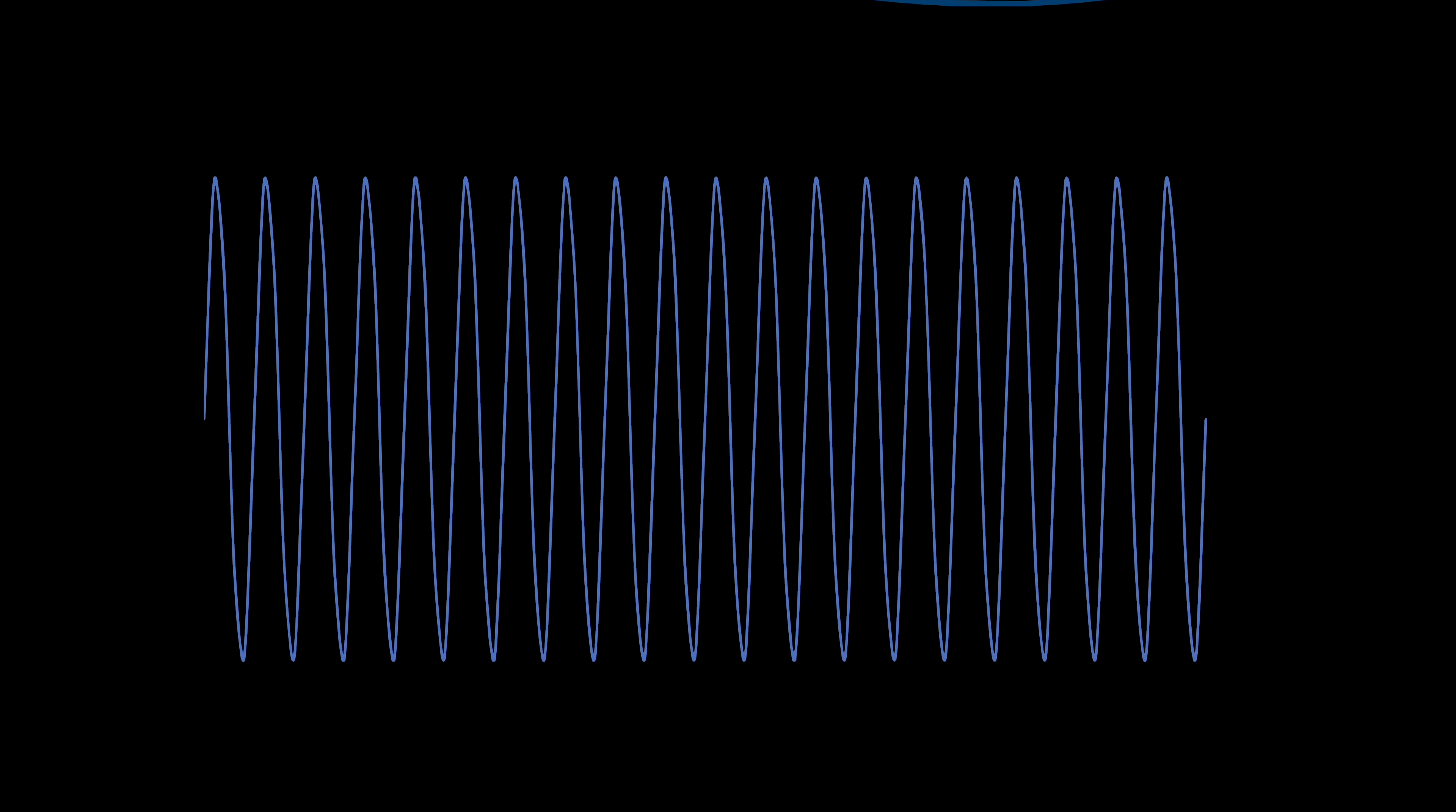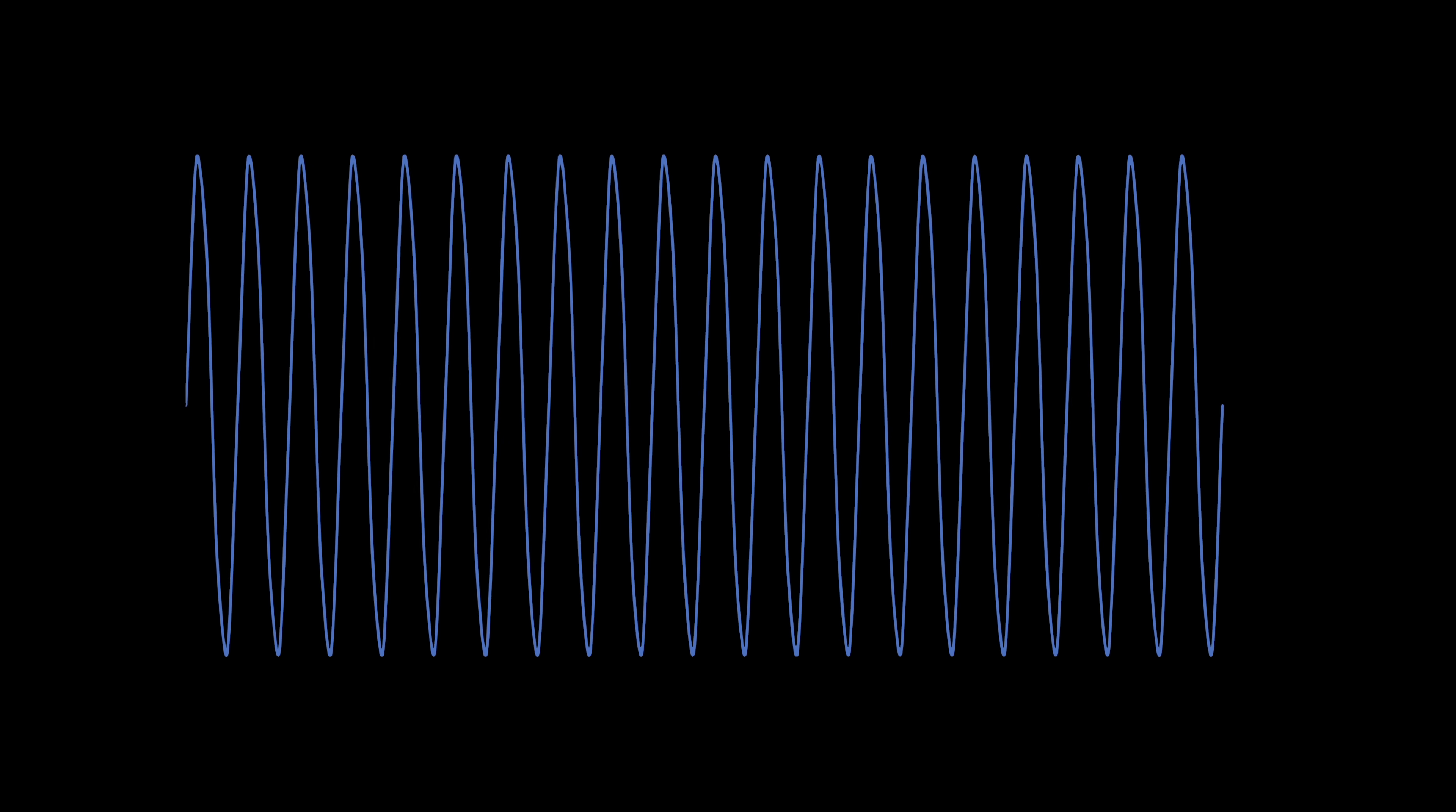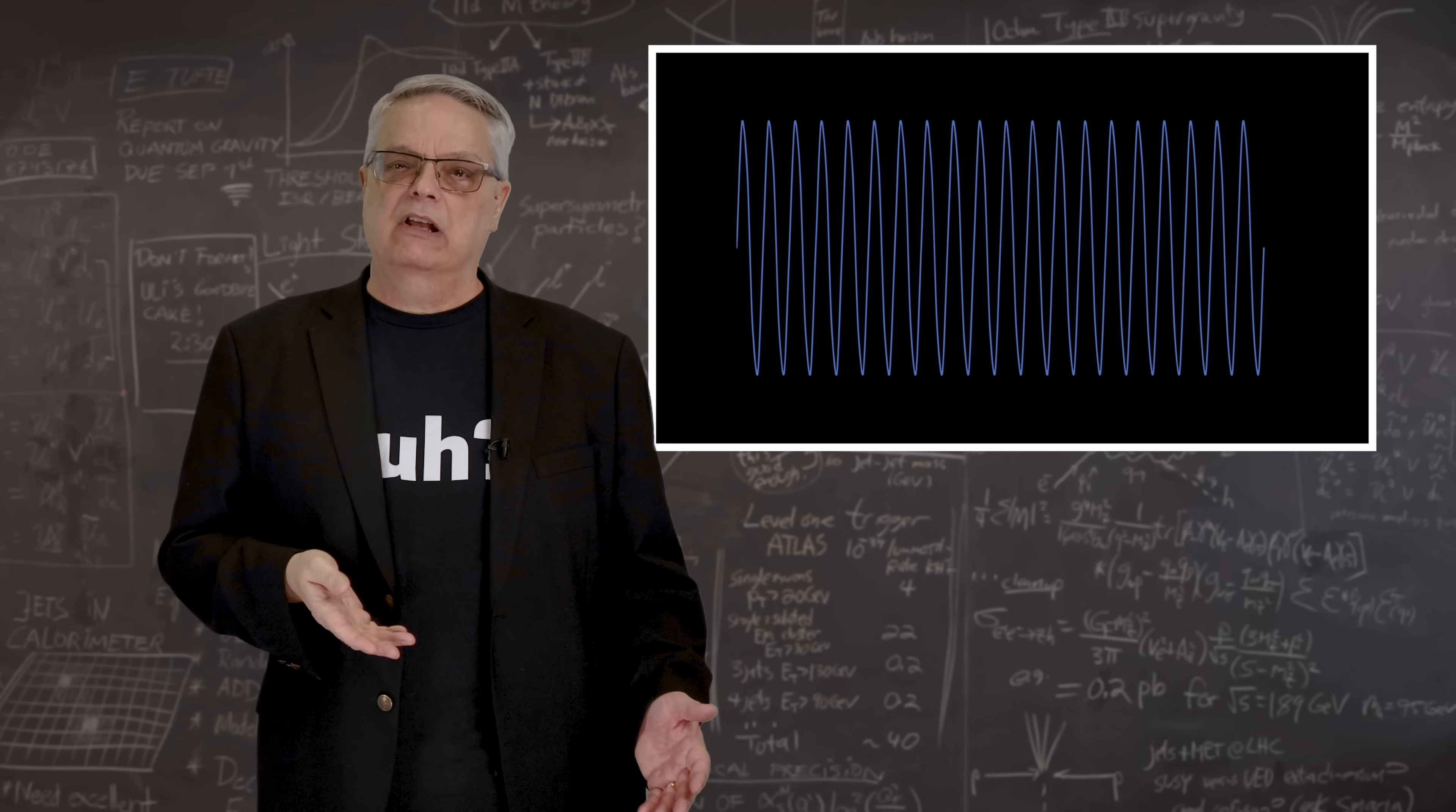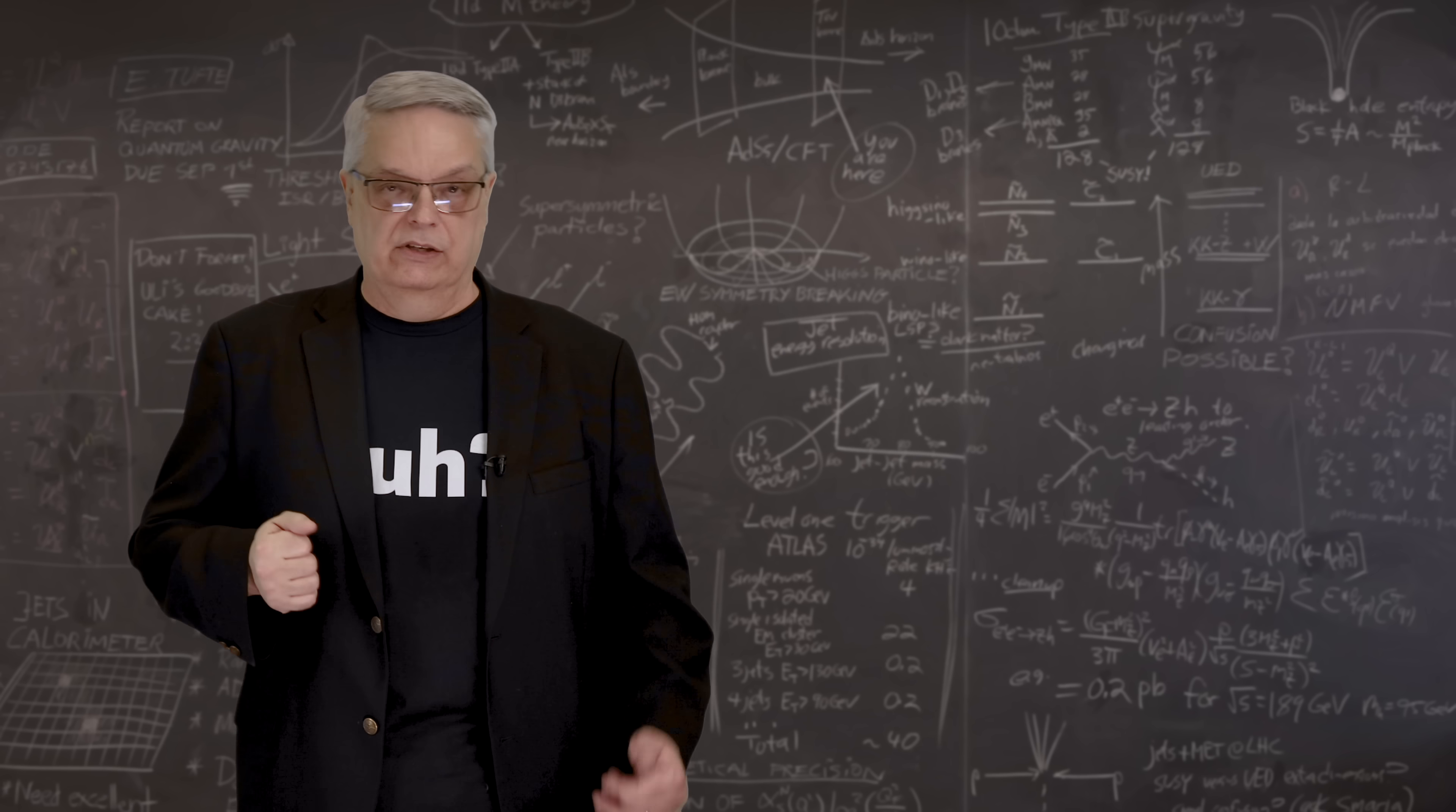A mathematician would say that you have to add up all wavelengths all the way down to zero length. But we know that the standard model fails for lengths shorter than the Planck length.